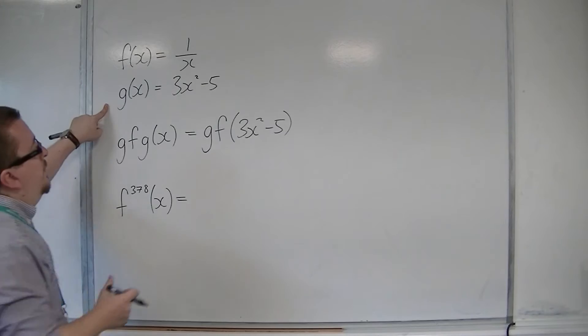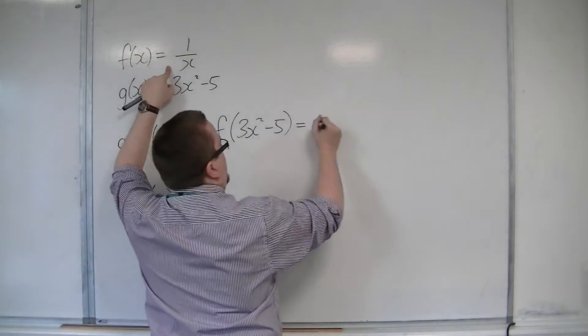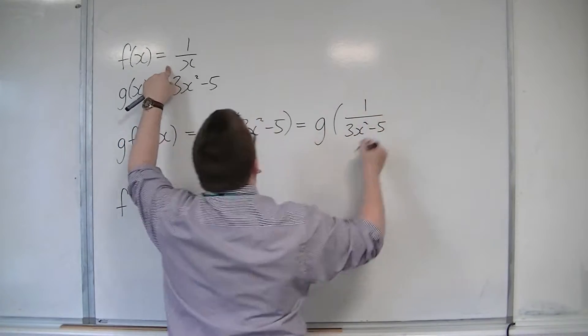So 3x squared minus 5 is then going to 1 over x. So this is g of 1 over 3x squared minus 5.